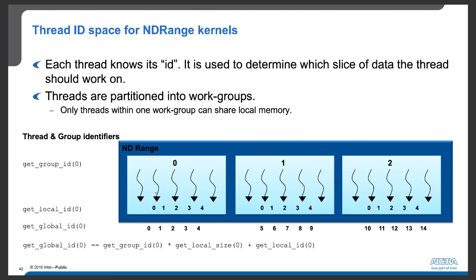We identify threads using local IDs and global IDs. Global IDs start from 0 and go up to 14 for 15 threads. Within each workgroup, threads have local IDs: in workgroup 0, the local IDs are 0, 1, 2, 3, and 4; and similarly for workgroup 1. The global ID can be calculated using the formula: group ID times the local size (number of threads per group), plus the local ID of that thread.